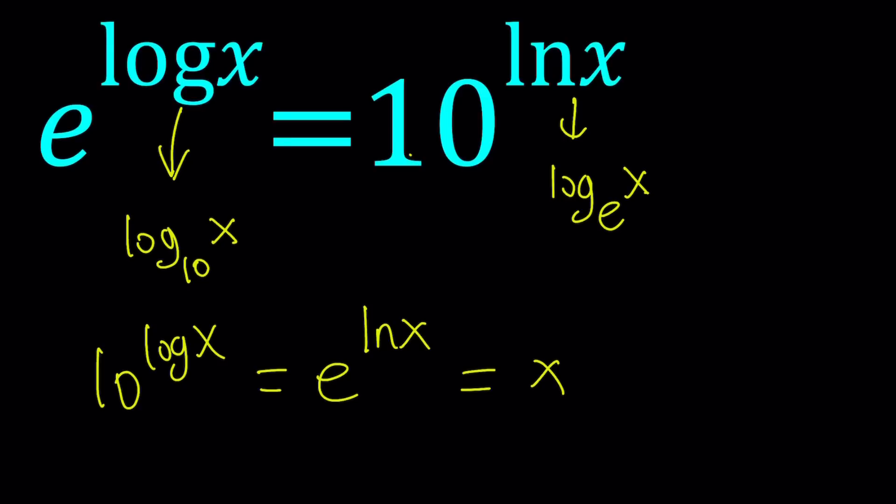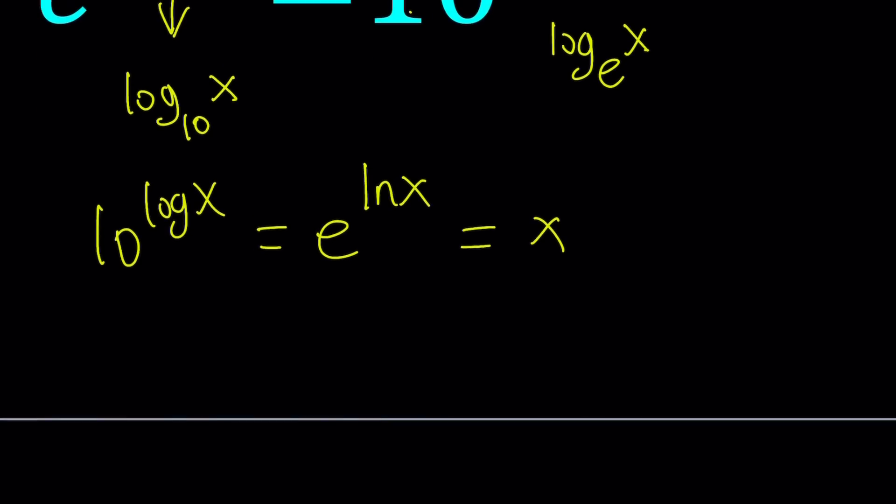Because x satisfies this equation, but ln x and log x must be well defined, so x must be positive. This is a must, so only satisfied for positive real numbers. Make sense?